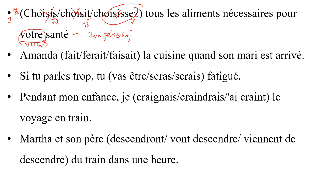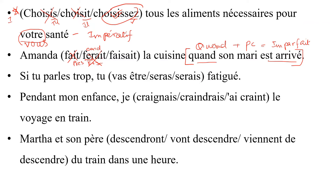Next one: 'Amanda — la cuisine — consumerie à 30.' This is a clear structure — a 'quand' clause where you have 'quand' plus passé composé. 'Quand' plus passé composé will always require the other clause to be in the imparfait. 'Faisait' is the imparfait root with the imparfait ending, so the answer is 'faisait'.